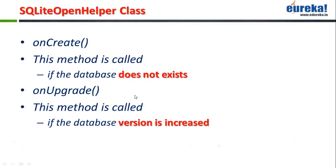When I have uploaded my application onto the Google Play and I'm actually making some changes to the database, since I had versioned the database with version one in my previous release and now I have versioned my database with version number two in my new release, the onUpgrade method will get called. This method will actually upgrade the database from the earlier version to the newer version. This is how it works when the database version is increased.